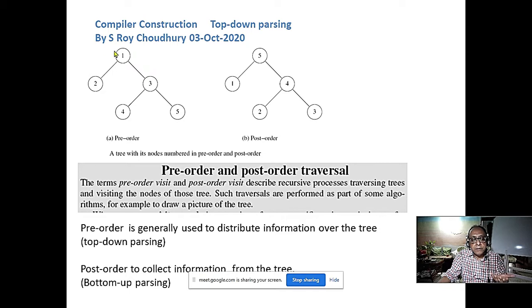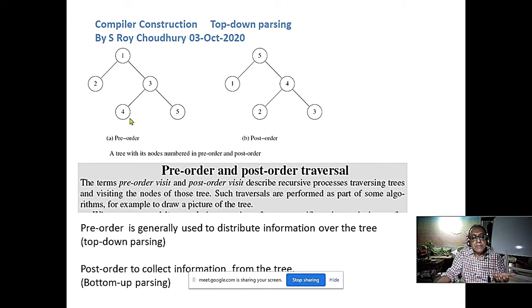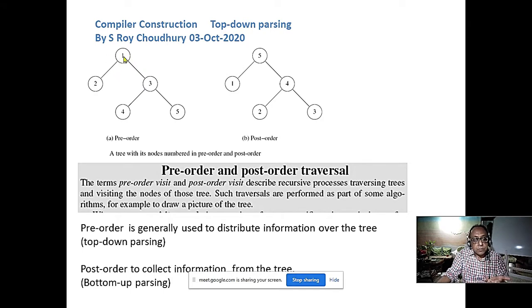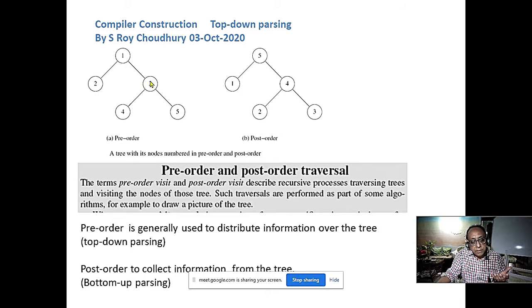Why am I calling it pre-order? The root of the whole tree is visited first. I am visiting root 1 first, then left child, then another left child. First root, then this child, then this root, then the right child root, then left child. I always go pre-order: first root, then child, then another root, right child — this is pre-order.